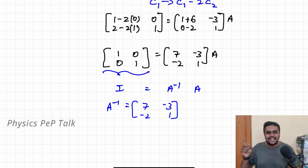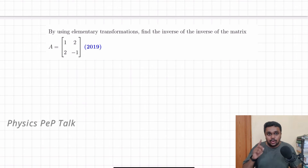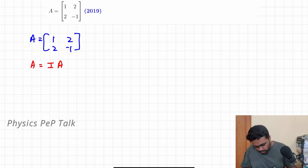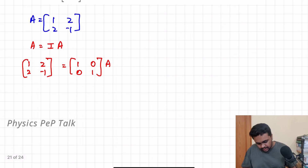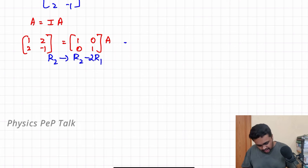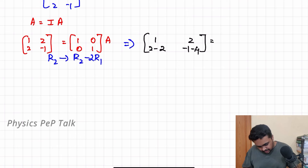Next problem — row transformation. I will write matrix A as [1, 2; 2, -1]. We know A equals identity matrix into A. So [1, 2; 2, -1] equals [1, 0; 0, 1] into A. To make this element 0, R2 is transformed as R2 minus R1. R1 as it is; 2 minus 2 into 1 is 0, minus 1 minus 2 is minus 3. RHS: R1 as it is, 0 minus 1 is minus 1, 1 minus 0 into A.